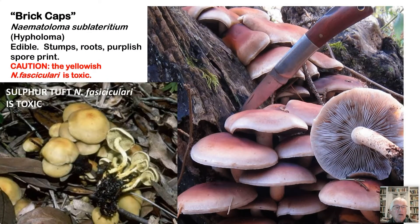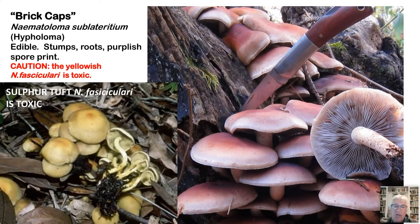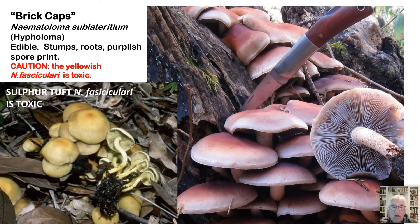These are brick caps — Nematoloma or Hypholoma sublateritium. They have a pinkish butterscotch cap and a sort of purple spore print — sometimes it almost looks a little green, but collect it on paper and it's purple. They grow on wood and are often the last fruiting mushroom you can find. They are edible, particularly when young; when they get old they get a little bitter. Don't confuse them with the yellow Hypholoma fasciculare, which are toxic — more yellow but also have a purple spore print. So be careful.